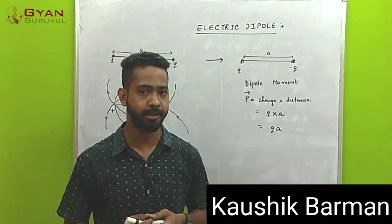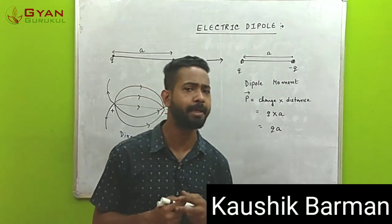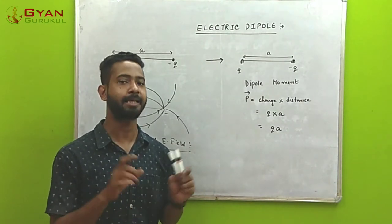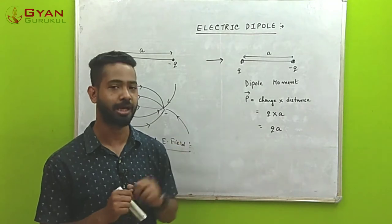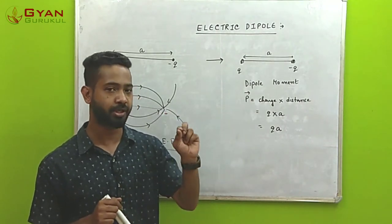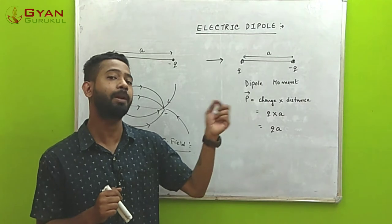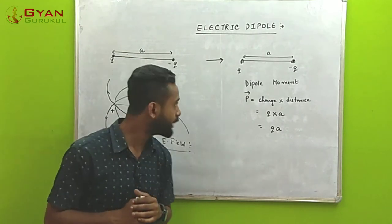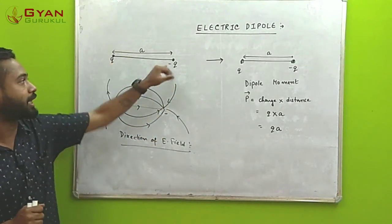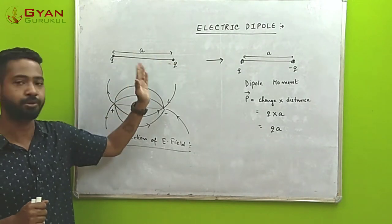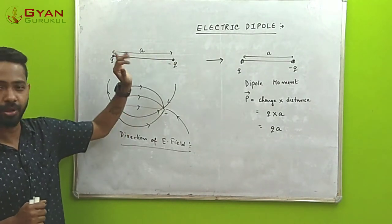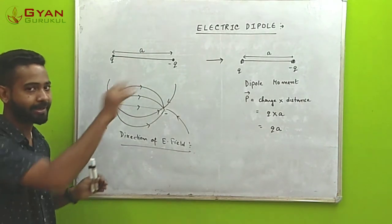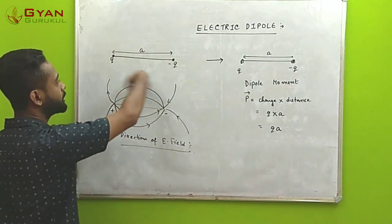Welcome back to the next video on electrostatics. In this video we'll be discussing electric dipole. An electric dipole is a combination of two charges — one positive and one with an equal magnitude negative charge — separated by a finite distance. As you can see, I have drawn two charges: plus Q and minus Q, separated by a distance A, where A must be a finite distance.